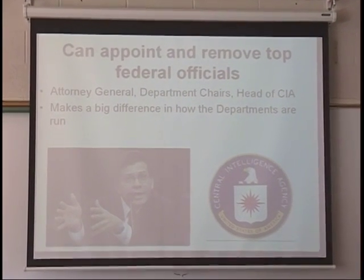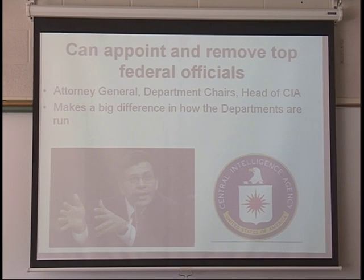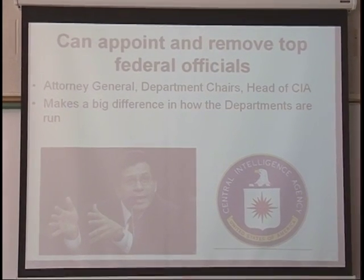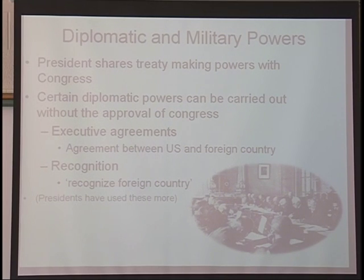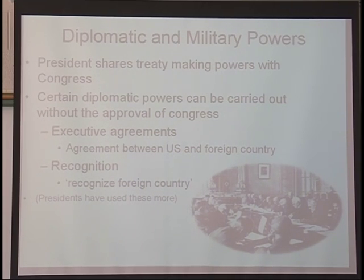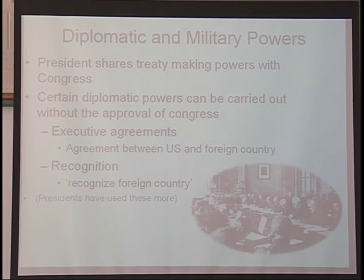The president can remove and appoint major federal officials, such as the head of the CIA. The president has several other diplomatic and military powers. The president shares the treaty-making power and capability with Congress. He is the chief diplomat of the U.S. government. Executive agreements are between the U.S. president and foreign countries, and the president can also choose whether the United States will recognize another foreign country's existence.